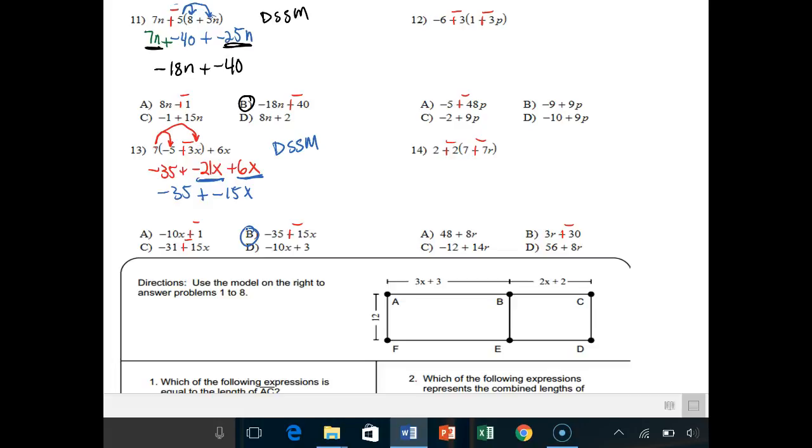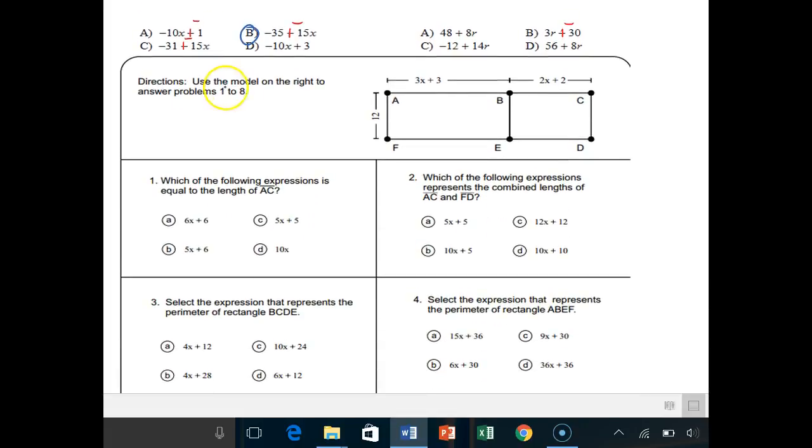When you're doing these problems, don't come up to me like I don't get it. Rewind and watch again. It's straightforward, you've just got to keep track of your rules. You've got to kind of talk yourself through it. Directions: use the model to the right for problems 1 through 8. We have a 12 here and a 3x plus 3 and a 12 and a 2x plus 2. Which of the following represents the length of AC?